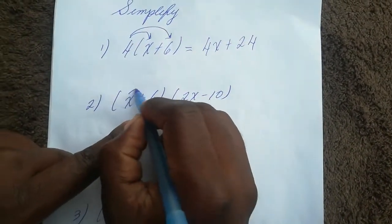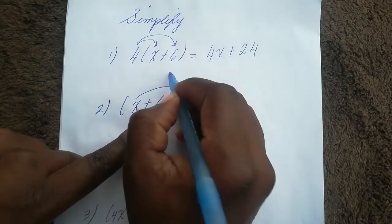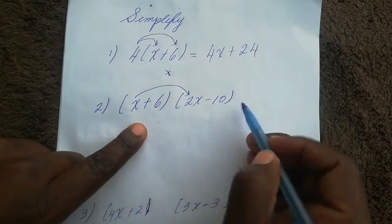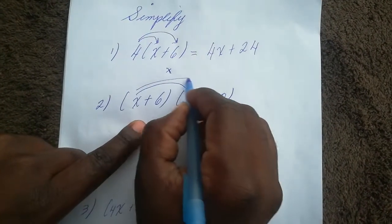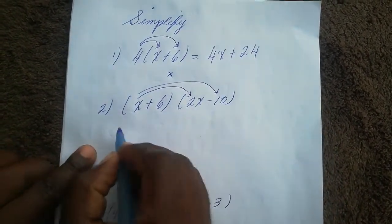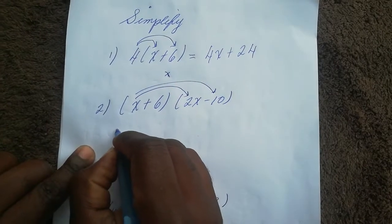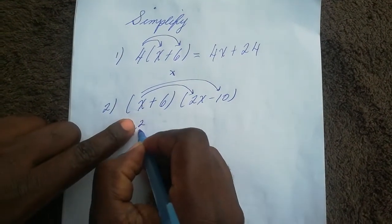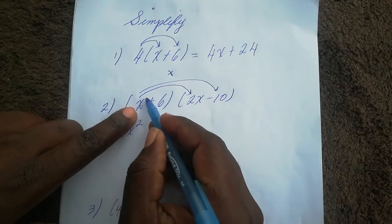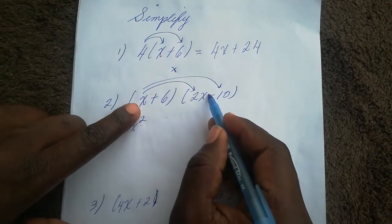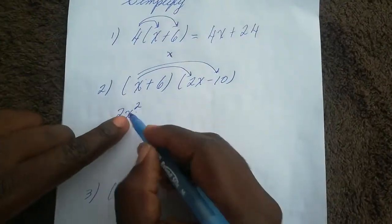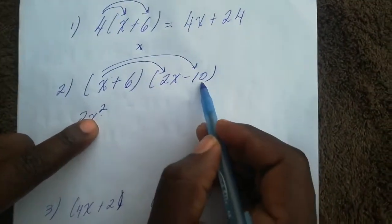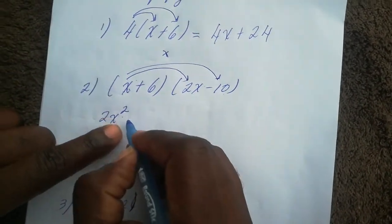The first thing you're going to do is multiply the first element in the first bracket by everything in the second bracket. So x times 2x gives me 2x squared — remember the law of indices: x to the power one times x to the power one, when we multiply with the same base we keep the base and add the powers. Then x times minus 10 gives me minus 10x.